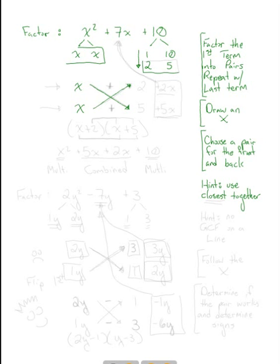I'm going to use x and x in the front because they were in the front, and I'm going to choose 2 and 5 because they're closer together than 1 and 10. So I put 2 and 5 in. The second hint — not applicable in this particular problem but worth saying — is no GCF on a line. So x and 2 are on a line, and x and 5 are on a line: no GCF on the same line.